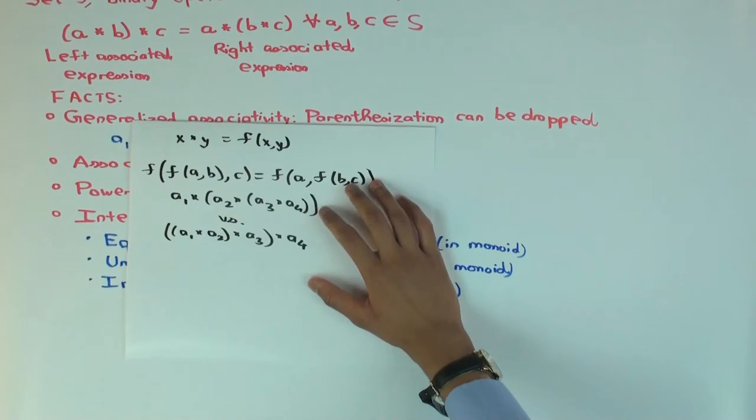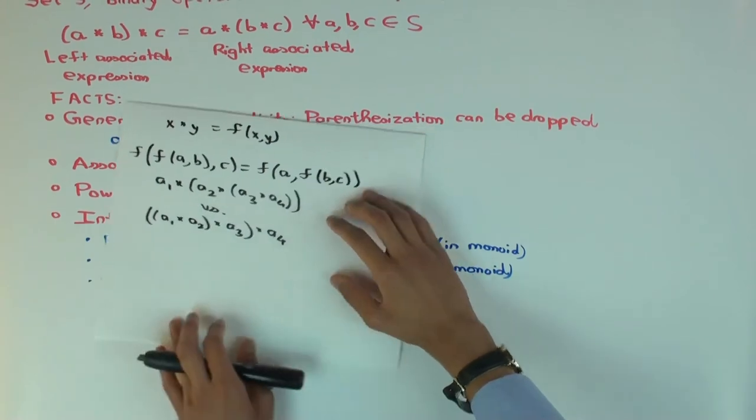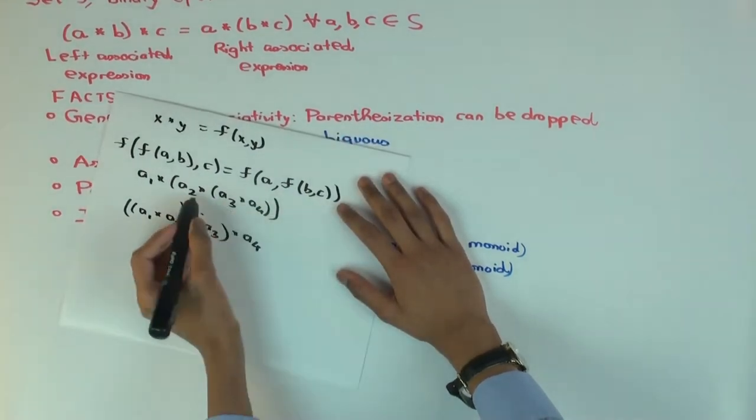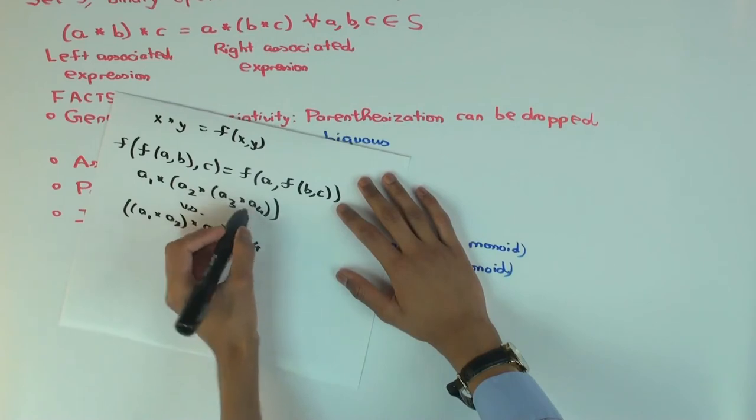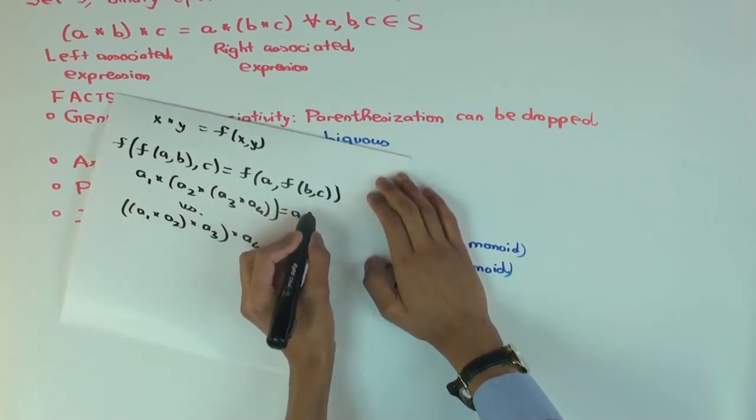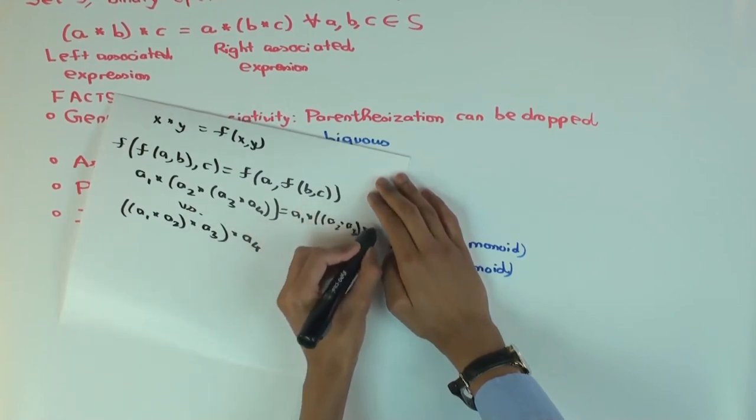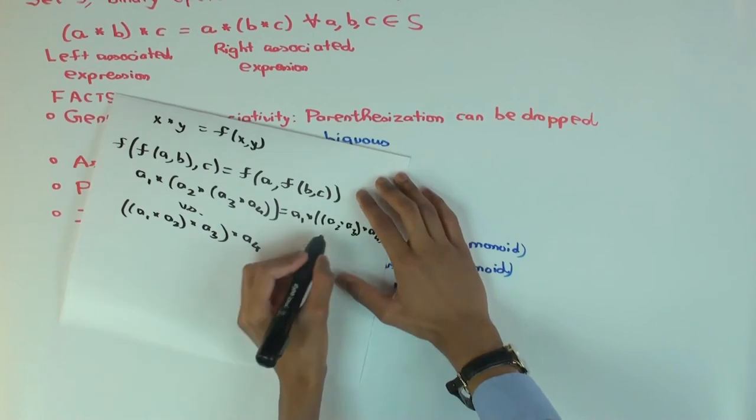So, how would you do this? Let's say I start with this. I started with this. How do I get to this? From here to here. Well, you associate A2, A3, and A4. This becomes A1 star (A2 star A3) star A4.